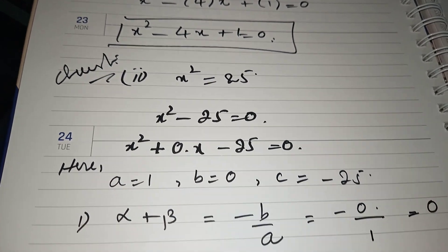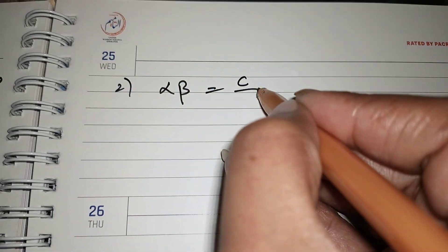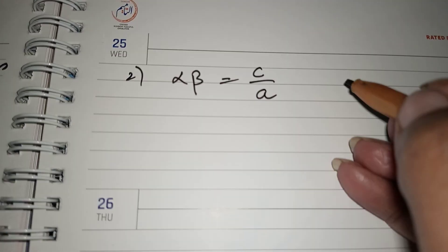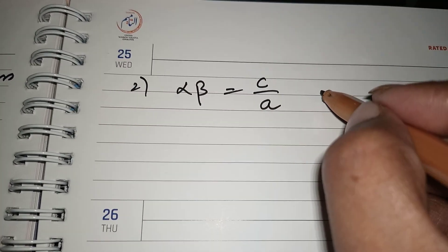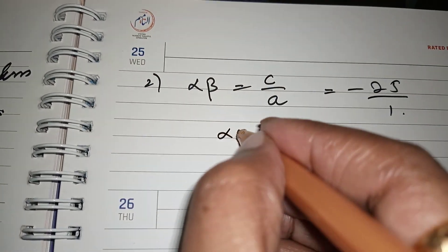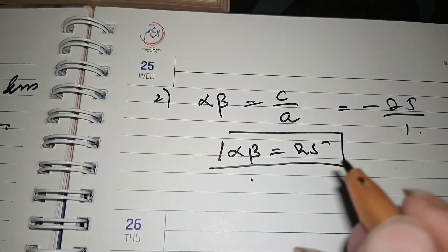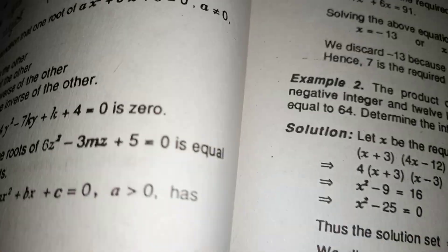The sum of the roots is minus b over a, which is 0 over 1, so the sum equals 0. The product of the roots, alpha times beta, is the constant term over the coefficient of x squared, which is minus 25 over 1, so the product equals minus 25. You can easily complete the remaining parts of question 1 using the same method.